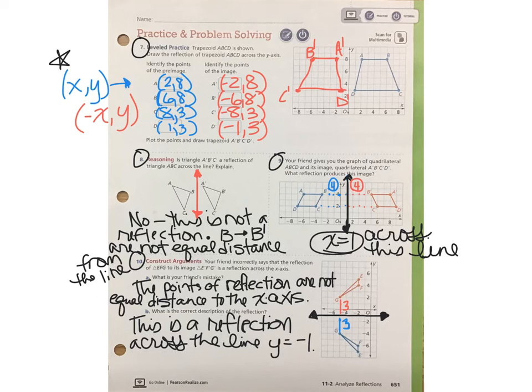This is actually a reflection across the line Y equals negative 1. In that line, both G and G prime are three units away. So the line of reflection has to be the line where those points are equal distance from each other, but on opposite sides.